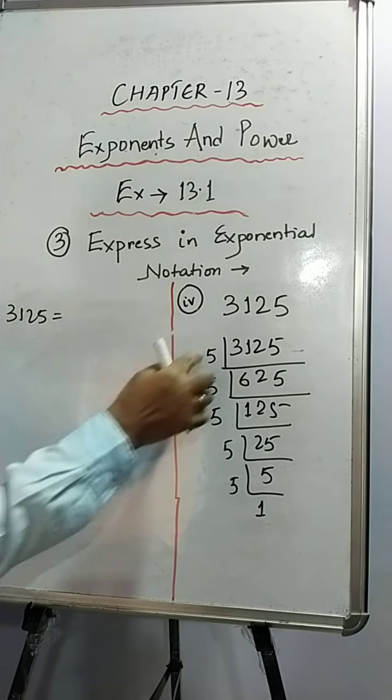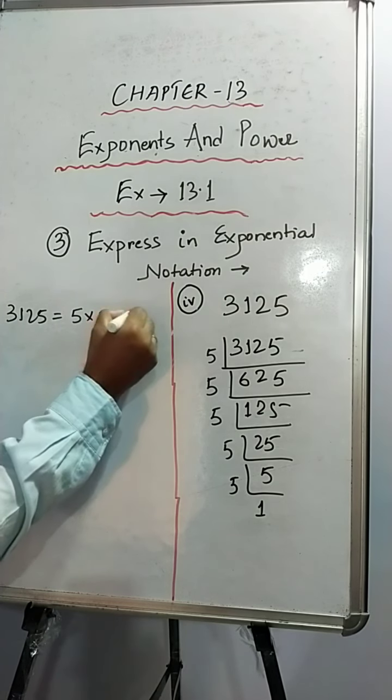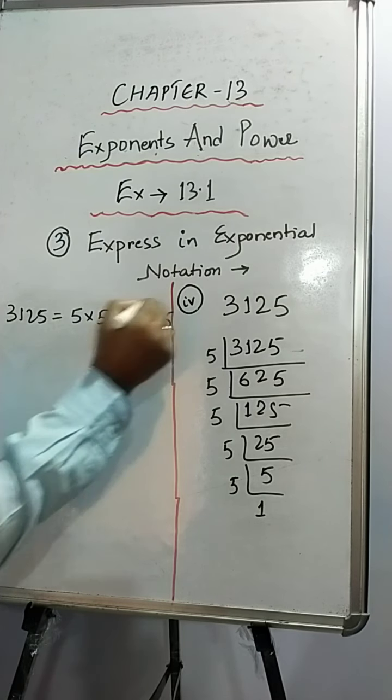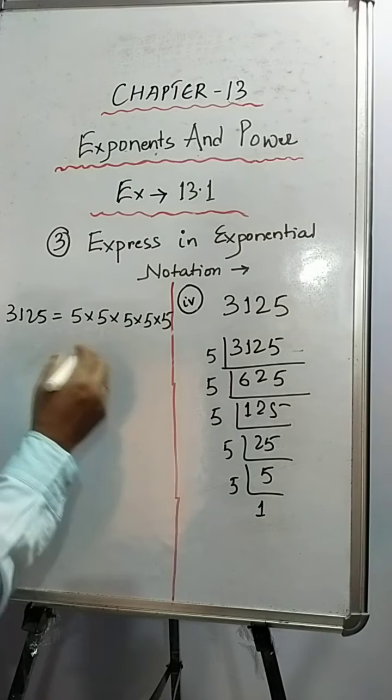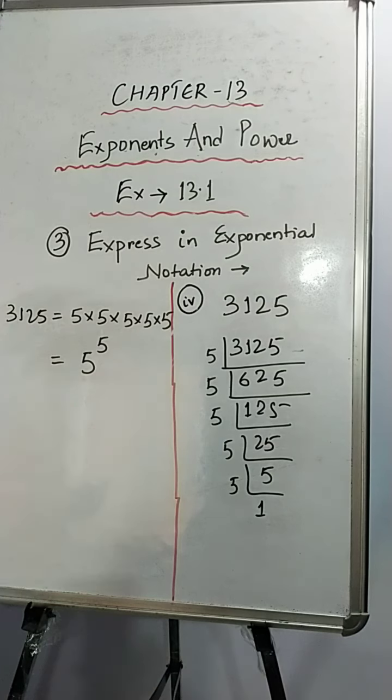So we will write this number here: 3125. We will write all the factors. That is, 1, 2, 3, 4 and 5. 5 fives are there. So how to write in the exponential form? 5 to the power 5.